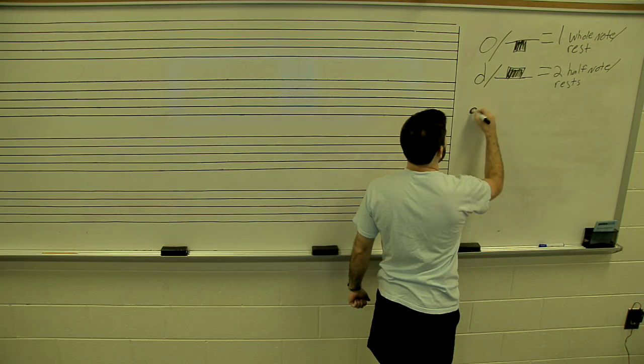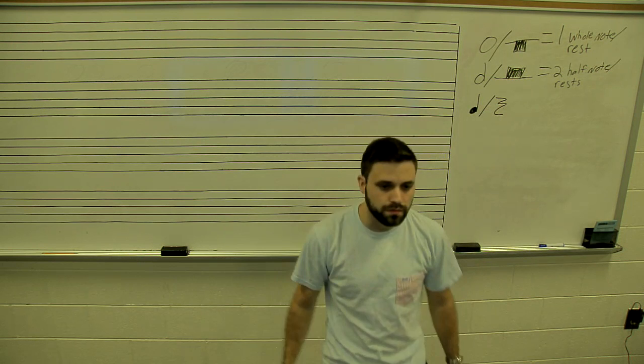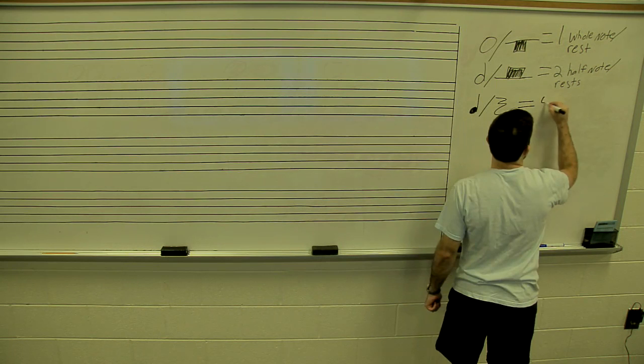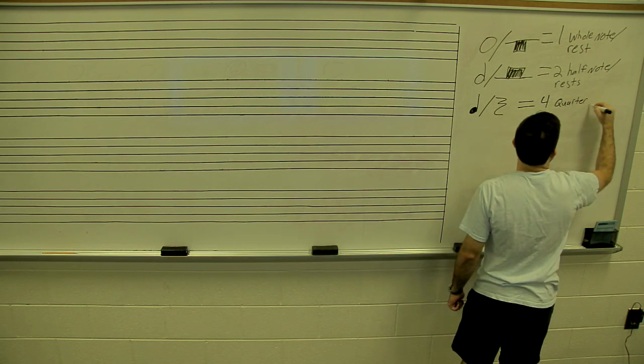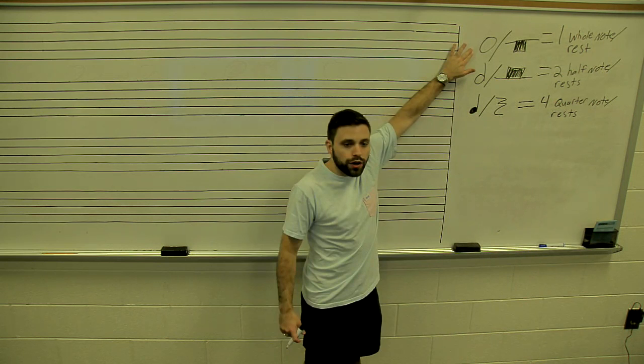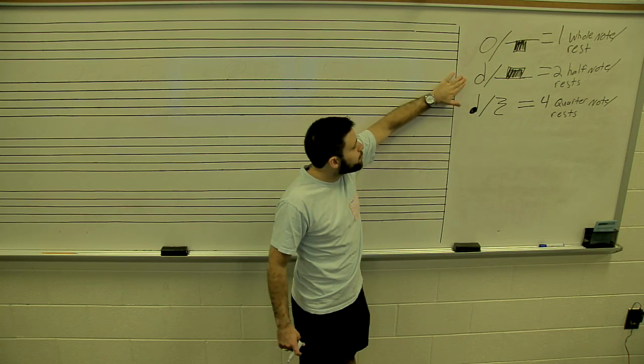Continuing down, you have quarter notes and quarter rests. Quarter rests look like a Z and C kind of thing. In one whole note, there are going to be four quarter notes or quarter rests. In a half note, there are going to be two quarters.